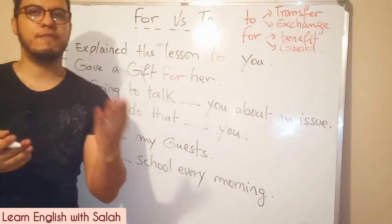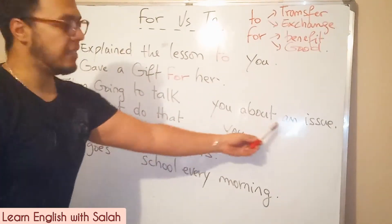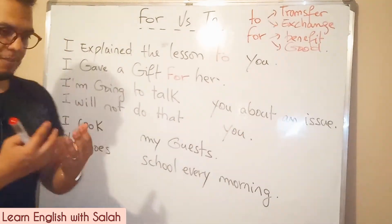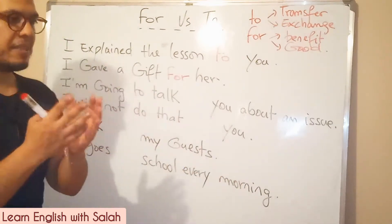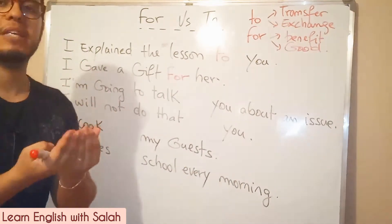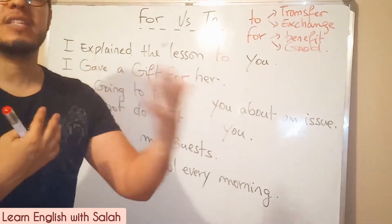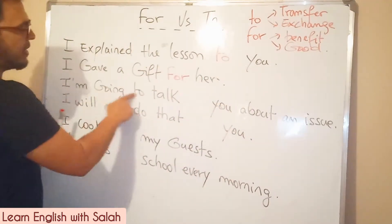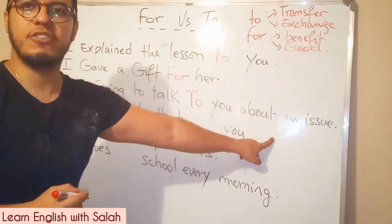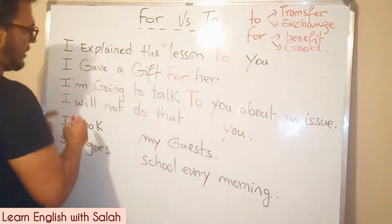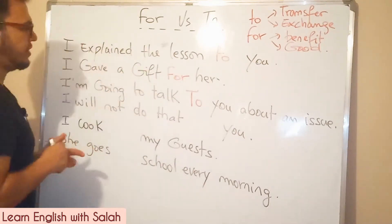'I'm going to talk about an issue' — it means I'm going to say something about something, there is a discourse, a speech that will move from me. I will transfer something. So it means: I'm going to talk to you about an issue. It is a discourse that moves from me to somebody else — to you, for example.